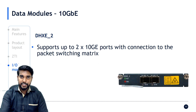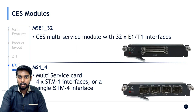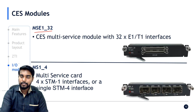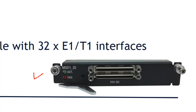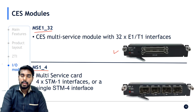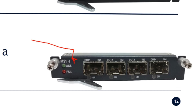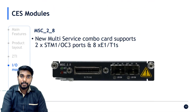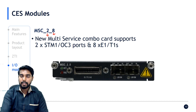The DHXE2 card — data hybrid XC with 10 gig — supports two 10 gig ports and can be inserted in the traffic slot of NPT 1022. For CES modules, the multi-service E1s card has 32 E1/T1 interfaces. Another card, MS1_4, is a multi-service CES card with four STM-1s supporting up to 252 E1s. There is also the MSC2_8 — a multi-service combo card with two STM ports and eight E1 ports.